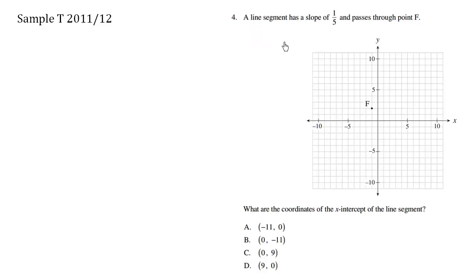A line segment has a slope of one-fifth and passes through point F. We can see here that point F is at (-1, 2) and the slope M equals one-fifth. We have a slope and a point. What are the coordinates of the x-intercept of the line segment?